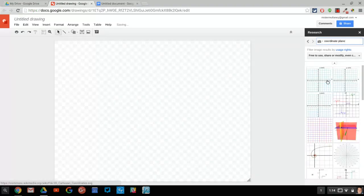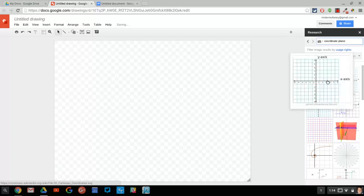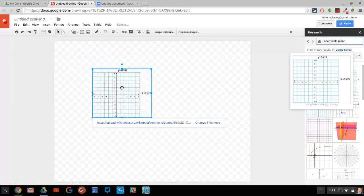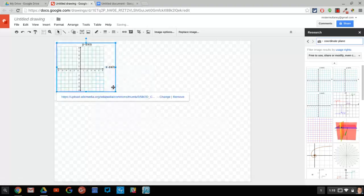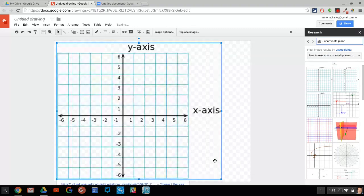The very first result, I'm filming this in January 2016, is from the Wikimedia Commons. It is quite nice. I'll drag it over. It has y and x values ranging from negative six to positive six. I resize to make it bigger.